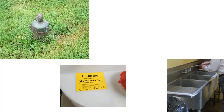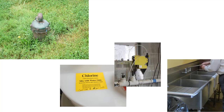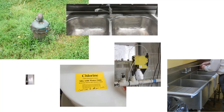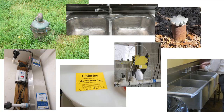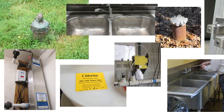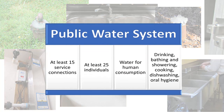If you are supplying your own water or treating an existing public water system source and this water is used for public consumption, you are considered to be a public water system, and it is necessary to work with the Department of Environmental Protection to ensure the safety of those you serve. A public water system is defined as a system which provides water to the public for human consumption, which has at least 15 service connections, or regularly serves an average of at least 25 individuals daily at least 60 days out of the year.